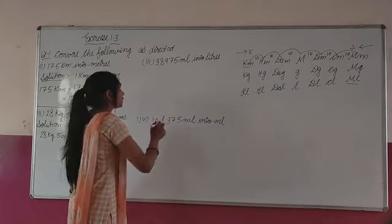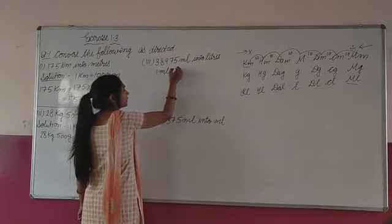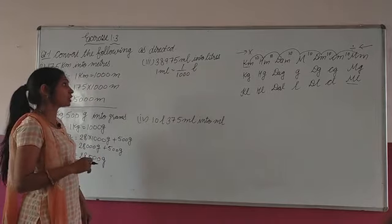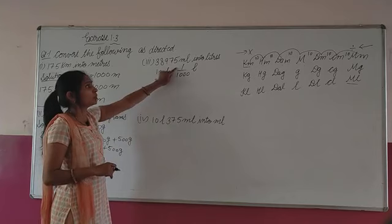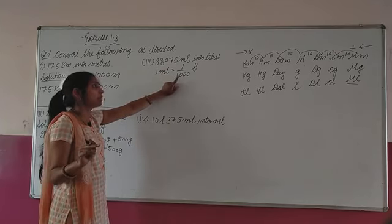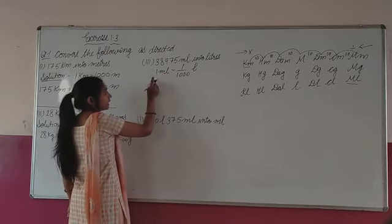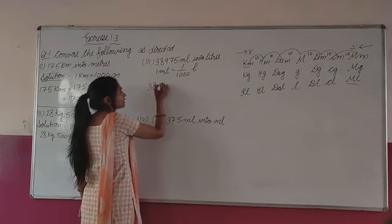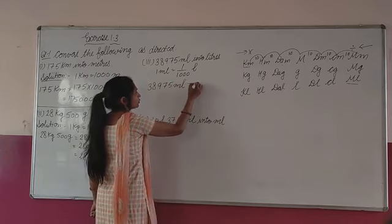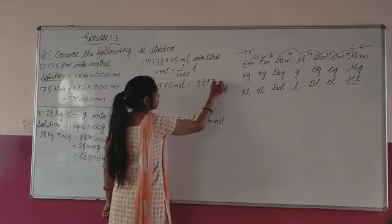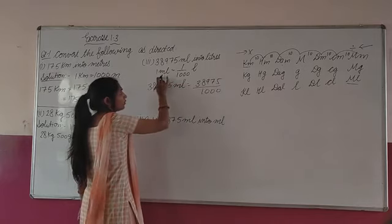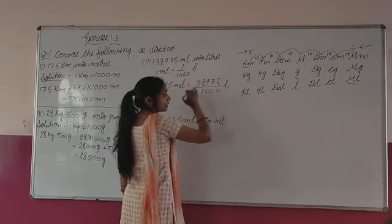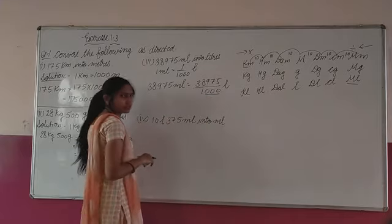It means 3 zeros, so jo 1 milliliter hai, wo 1 by 1,000 liter hai. Is type ke question aap already 5th class mein kar chuke ho. Clear? 1 milliliter = 1 by 1,000 liter, kyunki ab kya hoga? Divide — 1,000 se. So agar 1 milliliter hai to 1 by 1,000, aur agar hamare paas 38,975 milliliter hai, to 38,975 divide by 1,000. Kya ban gaya hai? Liter. 0's kitni hain? 3.